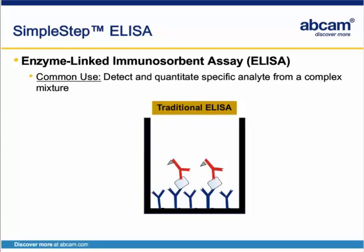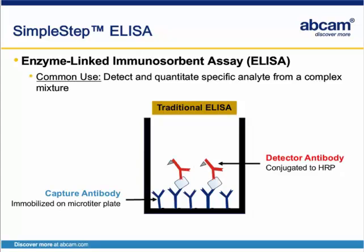In a sandwich ELISA, one antibody is immobilized to the bottom of every well in a microtiter plate. This antibody is called the capture antibody, and upon sample incubation, binds the target protein. An additional step incorporates a second antibody that can be labeled with a reporter enzyme, such as horseradish peroxidase, or HRP. This antibody is called the detector antibody, and completes the sandwich ELISA.